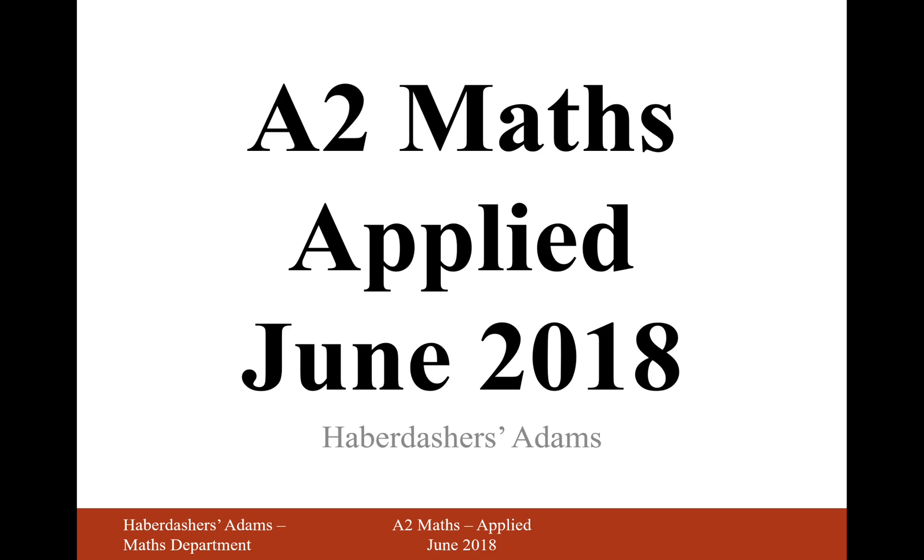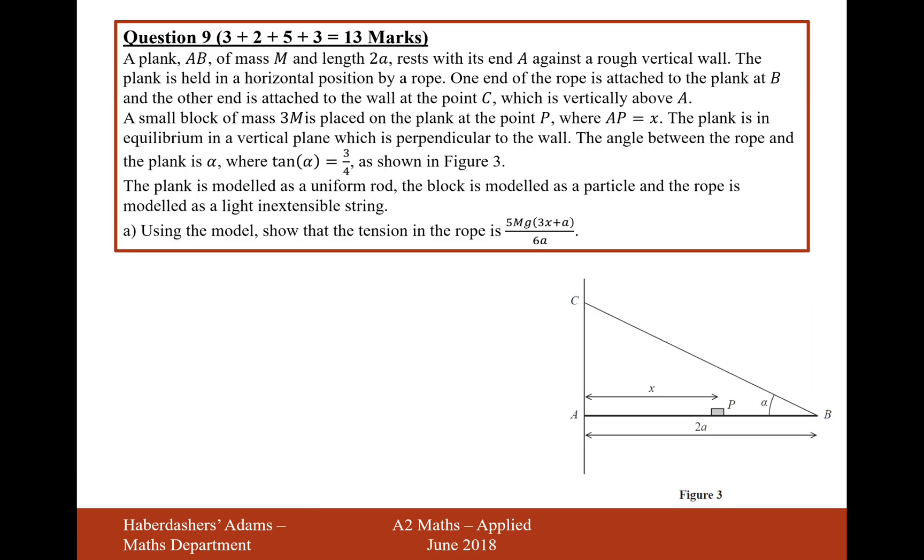Hello there, welcome to the June 2018 Applied Paper. Here we're looking at question 9. A plank AB of mass M and length 2L rests with its end A against a rough vertical wall. The plank is held in a horizontal position by a rope. One end of the rope is attached to the plank at B and the other end is attached to the wall at point C,